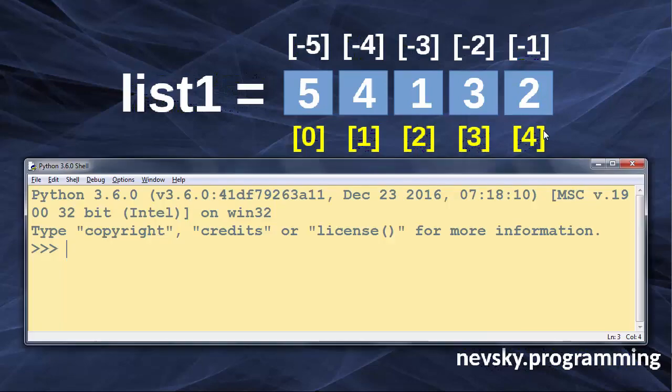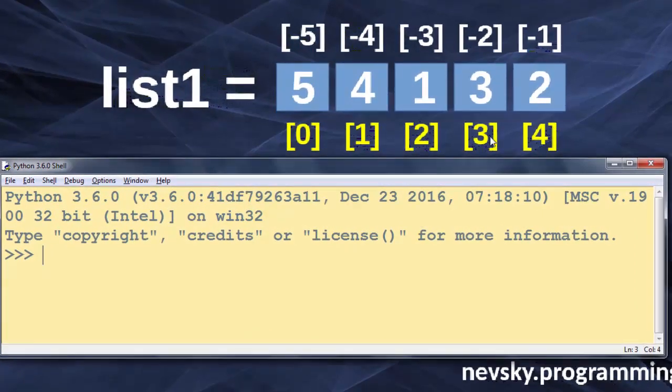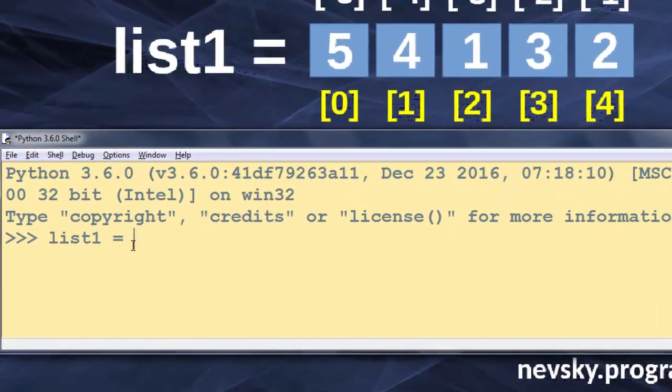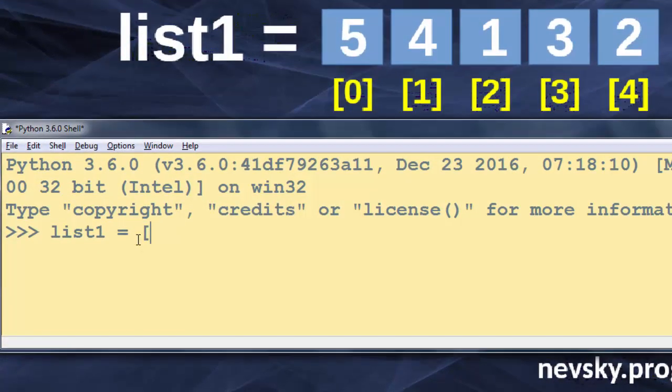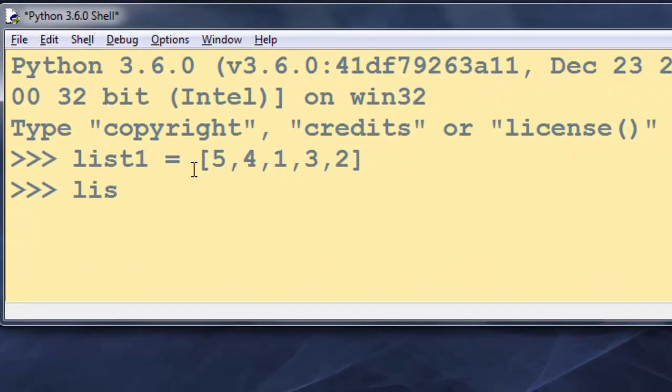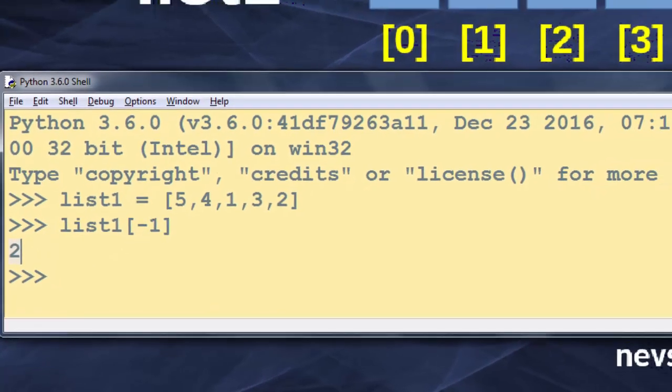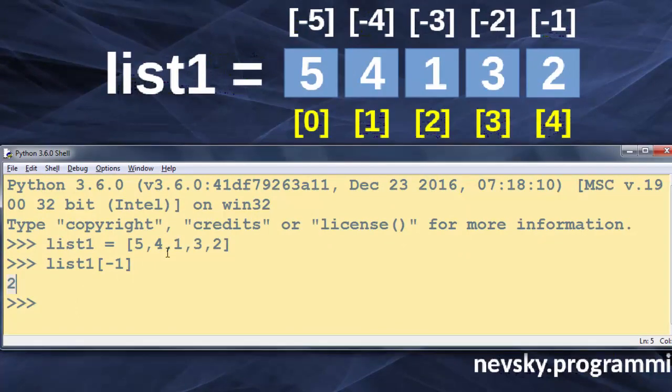In Python idle I'm going to create a list with these elements 5, 4, 1, 3 and 2. And then I'm going to access the last element of our list by using the index minus 1. And in this case that is number 2.